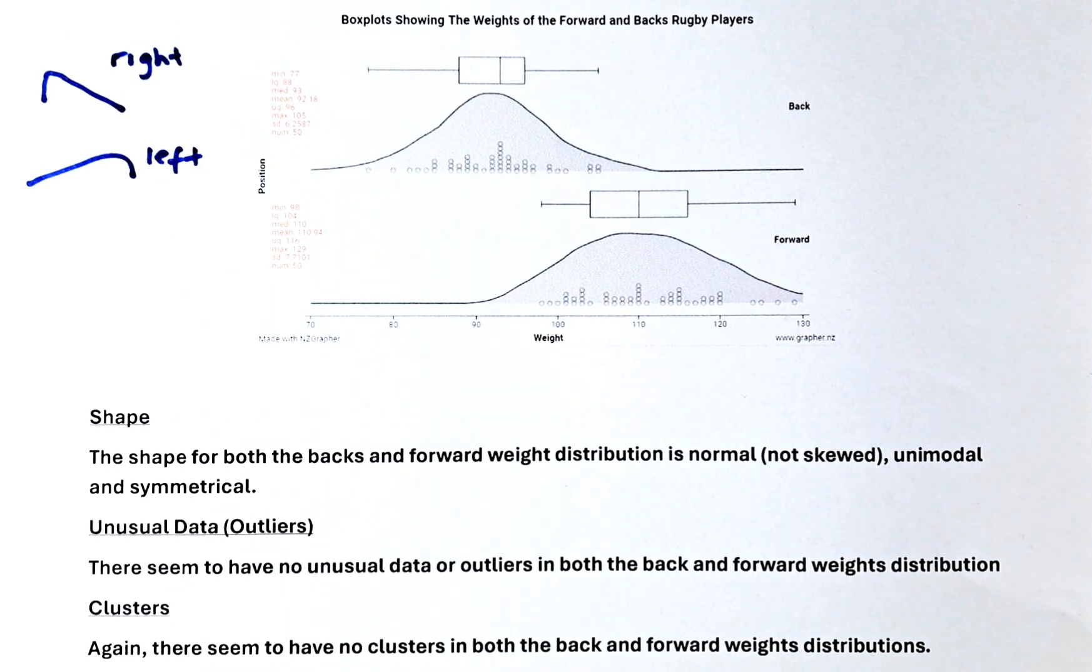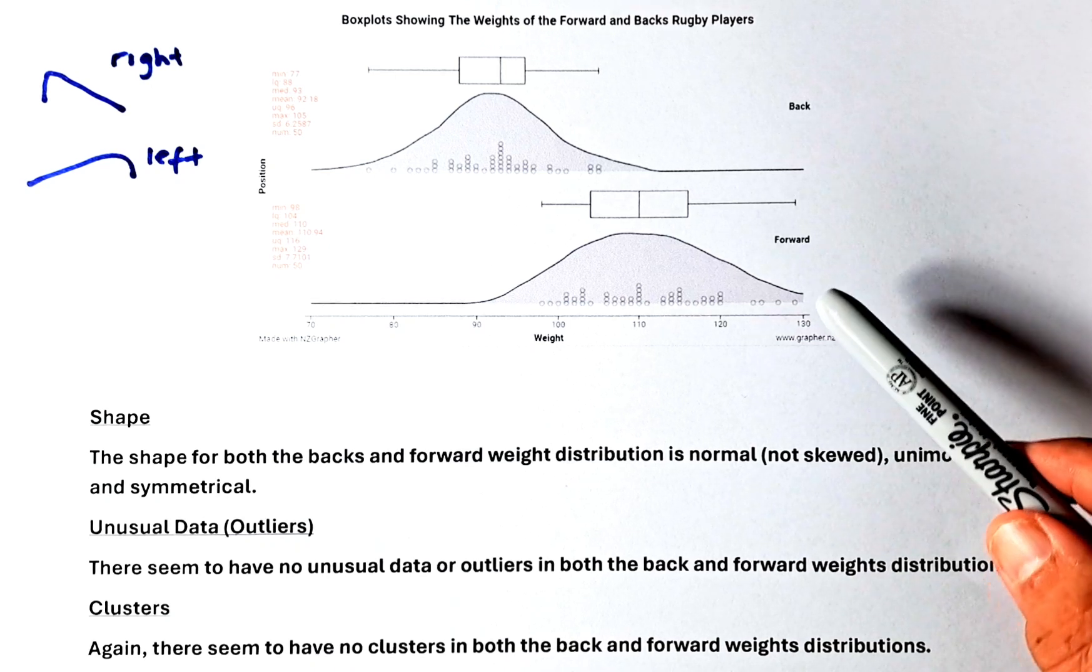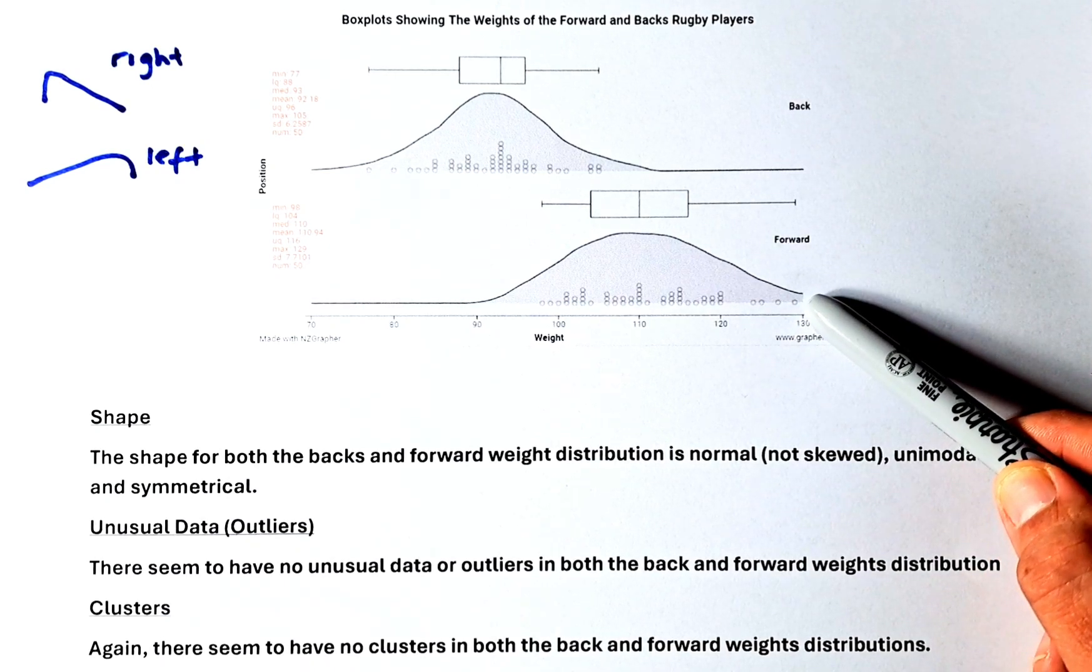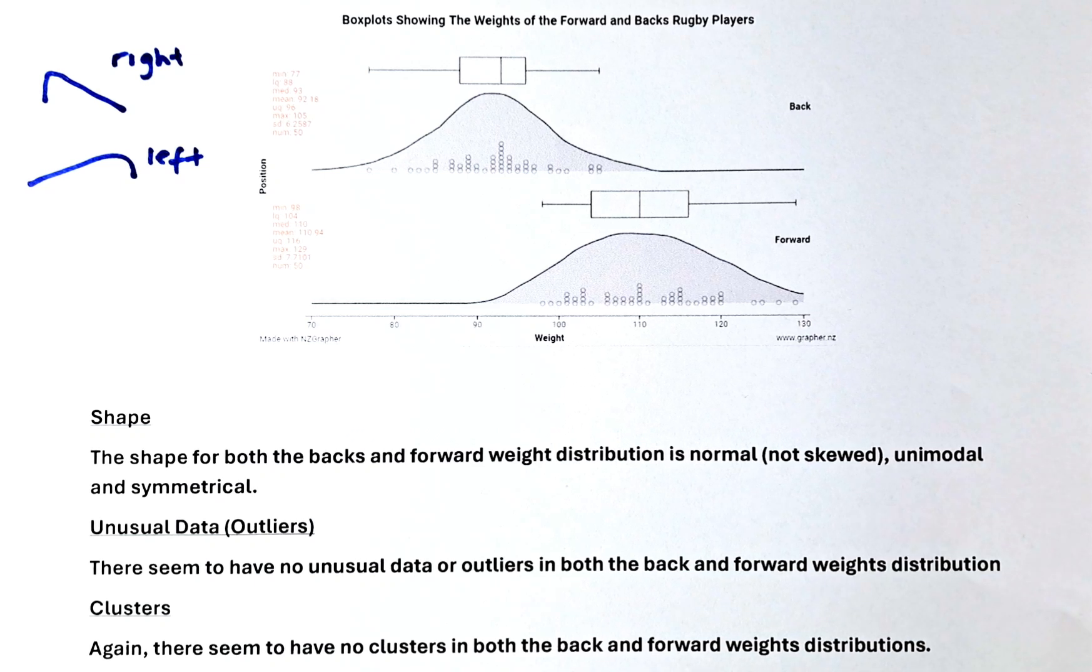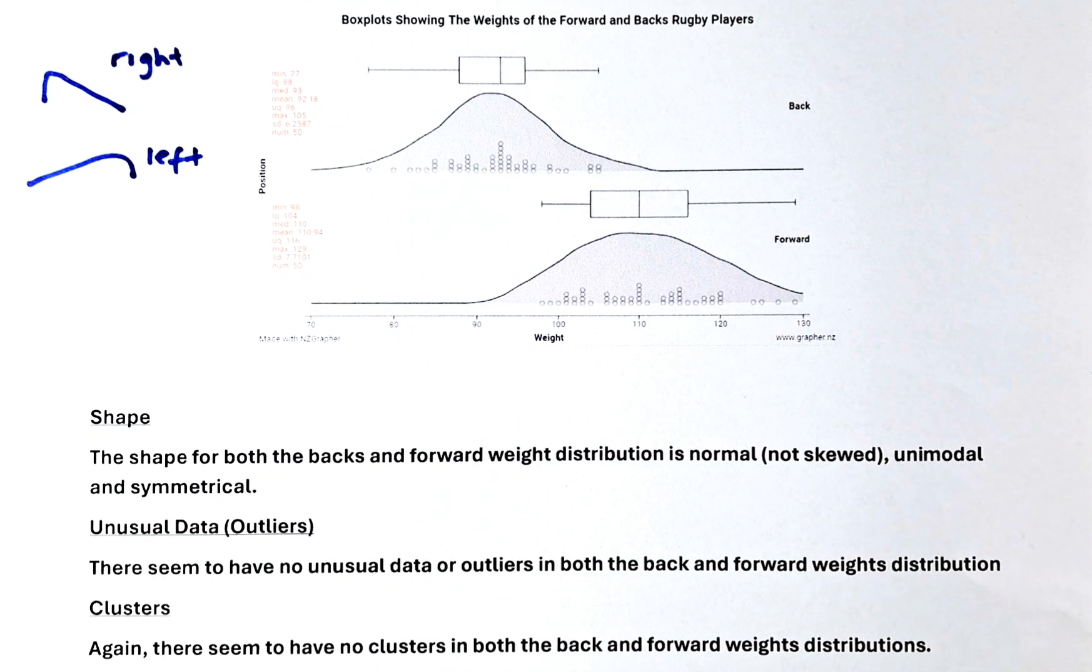We mentioned that there seem to have no unusual data or outliers for both the back and forward. So the highest weight for the forward is 130, the smallest is around 98. So it's acceptable. So we're not going to say there's any outlier. We're going to leave the data as it is.